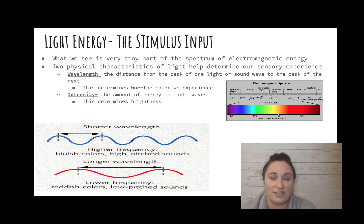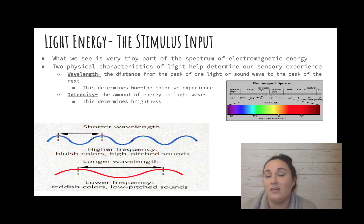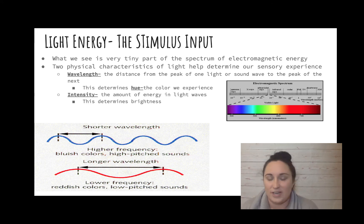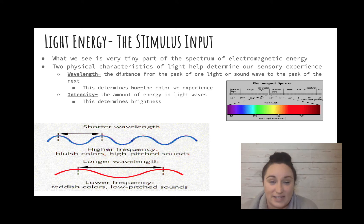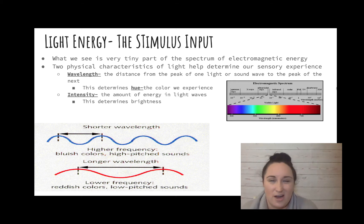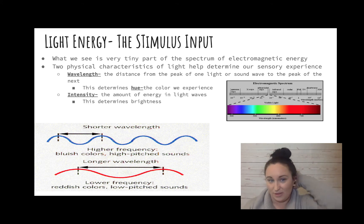Another word you need to know is hue — this is just the color that we experience, so different shades of blue, yellow, red, etc. And then there's also intensity, which is the amount of energy in the light wave. Intensity is what determines what we call brightness — how bright a color is has to do with the intensity of the light wave.